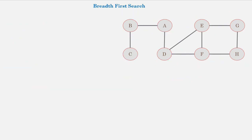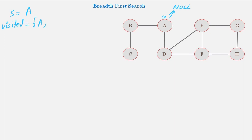Now I'll explain the actual BFS algorithm in a more systematic way. The first step is to select the source node — let's say A. Then initialize the level of A as zero and the parent of A as null, since we start traversal from A. To track visited nodes, we create a visited array and initialize it with A. To visit nodes in level order, we use a queue data structure and initialize it with A.